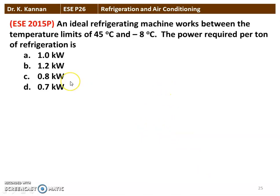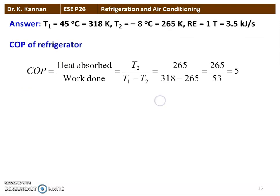The next question is from the 2015 question paper. An ideal refrigeration machine works between temperature limits of 45°C and −8°C. The power required per ton of refrigeration is 0.7 kilowatts. The condenser temperature T1 = 40°C = 318 K, and the evaporator temperature T2 = −8°C = 265 K. The refrigeration effect is 1 ton, which equals 3.5 kJ/s.